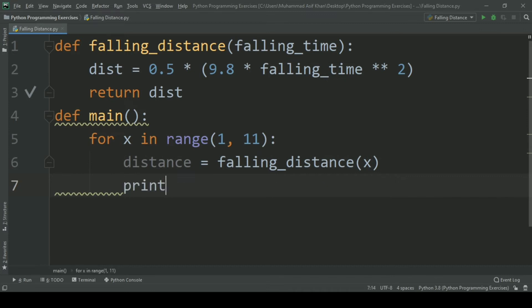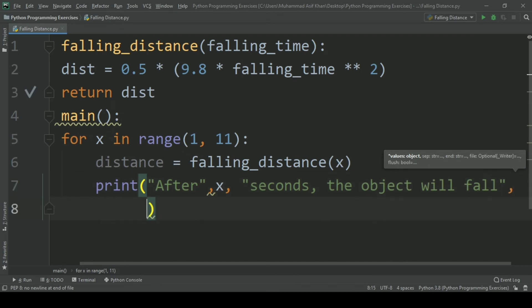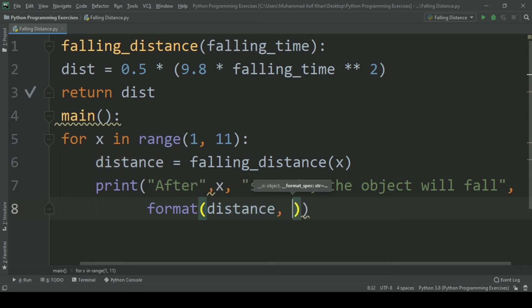Now print: for x seconds the object will fall, place the value of distance formatted to two decimal places, and add the string meters.